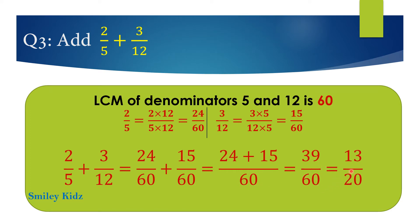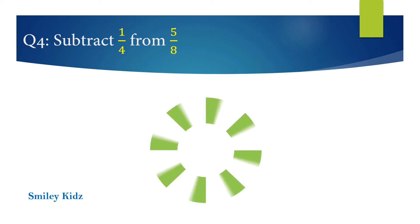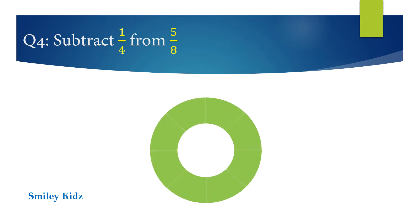39 by 60 equals 13 by 20. Question number 4: Separate 1 by 4 from 5 by 8. Your time starts now. And your time is up.